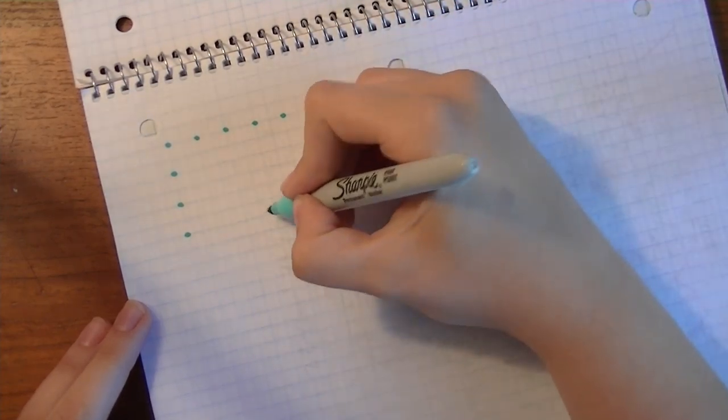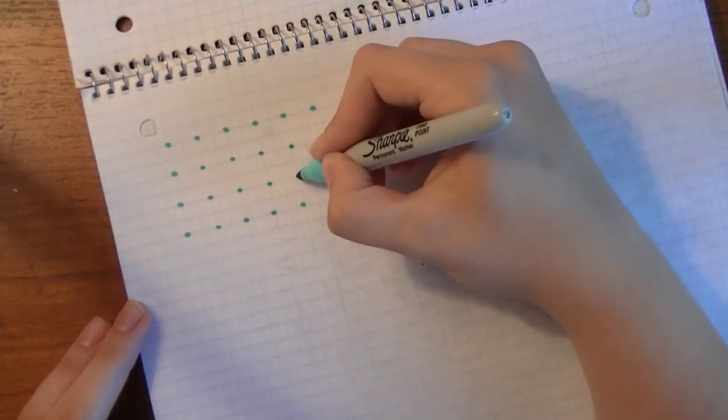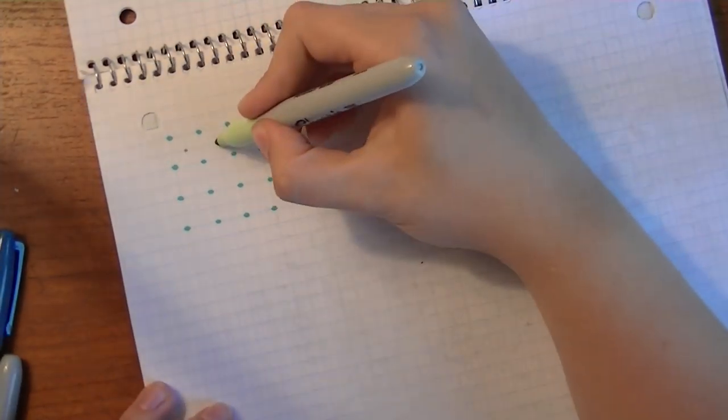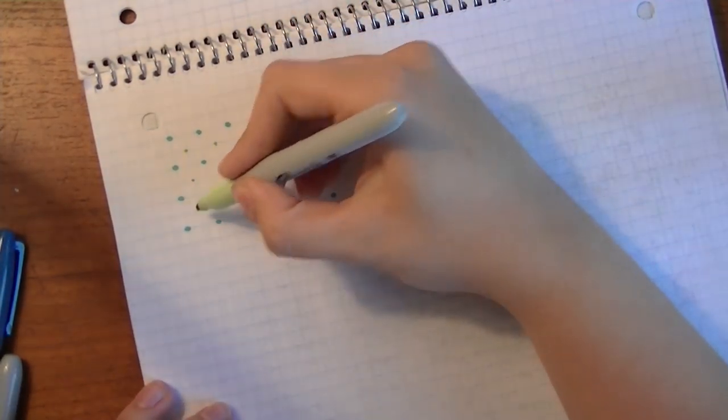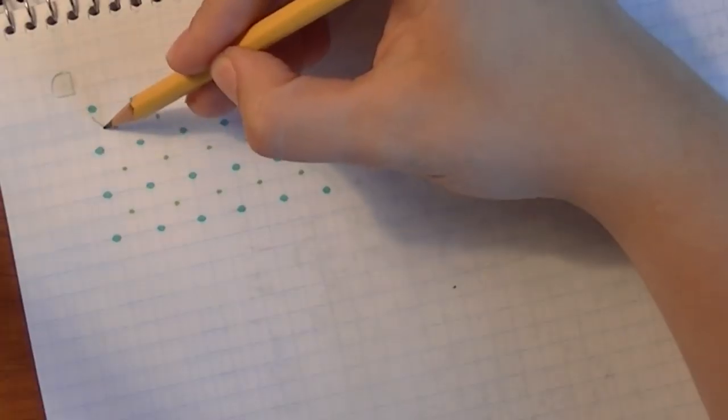So I always begin by making a grid of dots arranged in two little squares like this. If you're using graph paper, I do them two squares apart. That's my primary grid, and then I do a secondary grid.